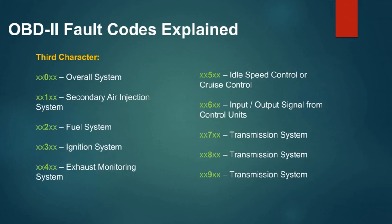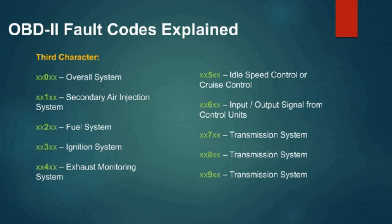The third character denotes the subsystem affected. 0: Overall System. 1: Secondary Air Injection System. 2: Fuel System. 3: Ignition System. 4: Exhaust Monitoring System. 5: Idle Speed Control or Cruise Control. 6: Input/Output Signal from Control Units. 7: Transmission System. 8: Transmission System. 9: Transmission System.